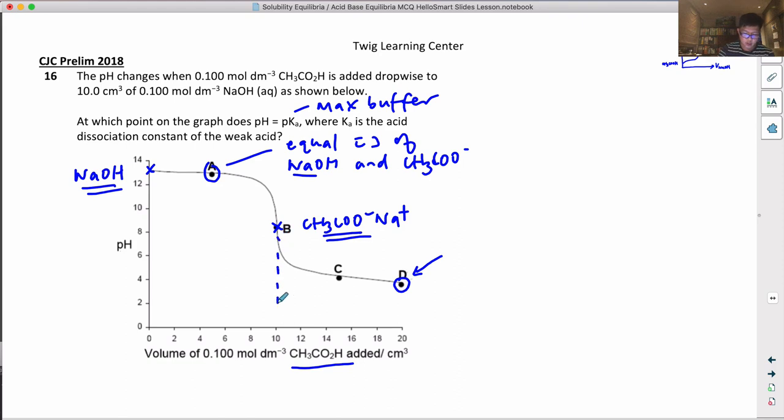The first 10 cm³ of the acid that was added all became the salt. All became the salt.